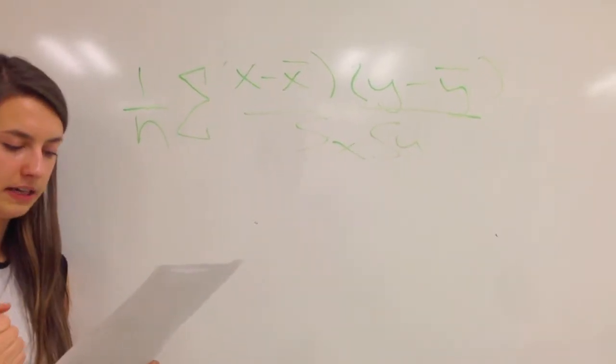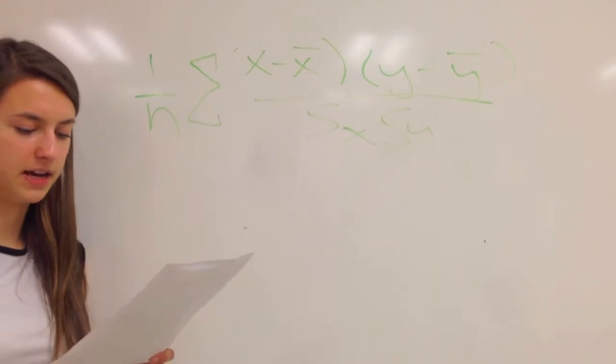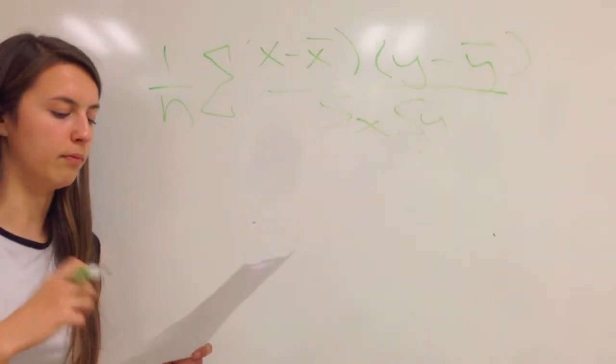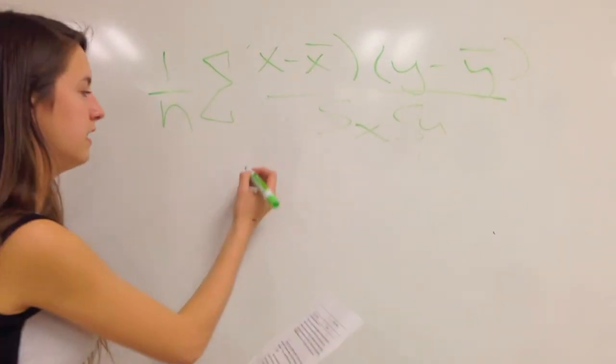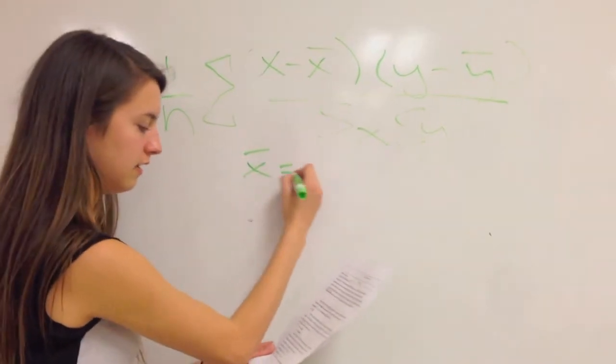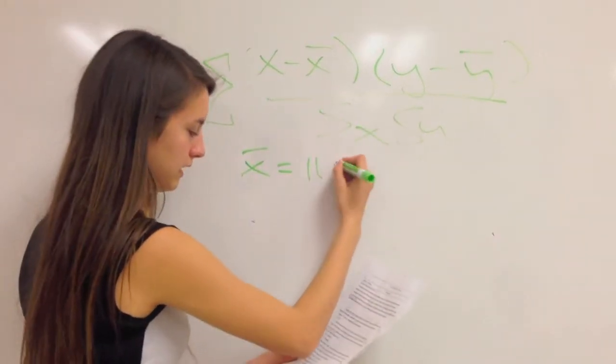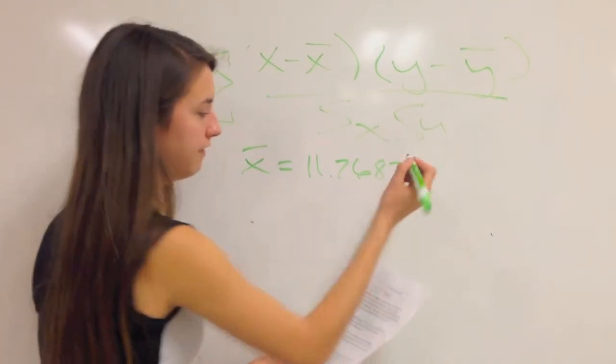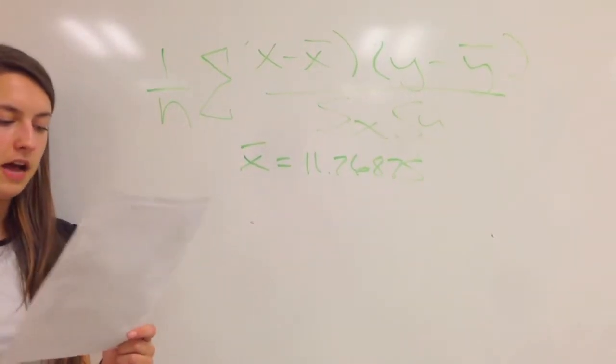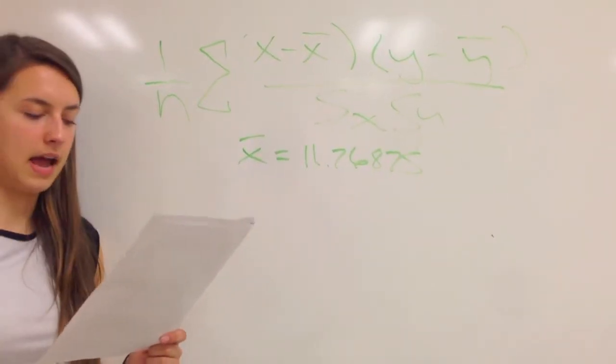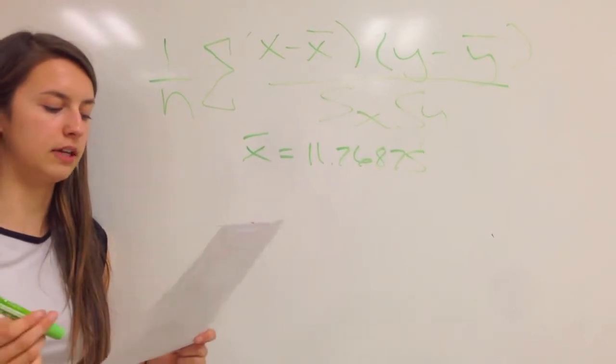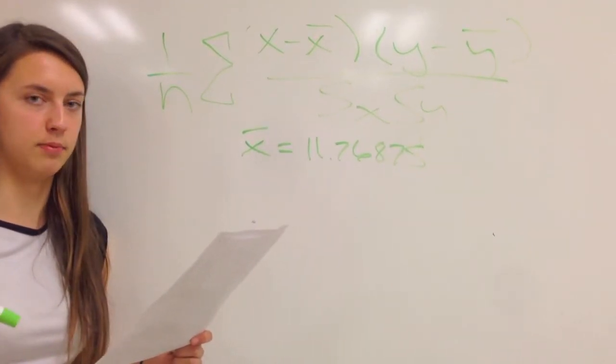The two standard deviations of x and y. So the first thing I need to do is find out the mean of my x-points, which is my independent data, which is called x-bar. And in this case, the x-bar is 11.76875. And how I found this was I added up all of my x-points and then divided it by 40, which is the total number of data points that I have.